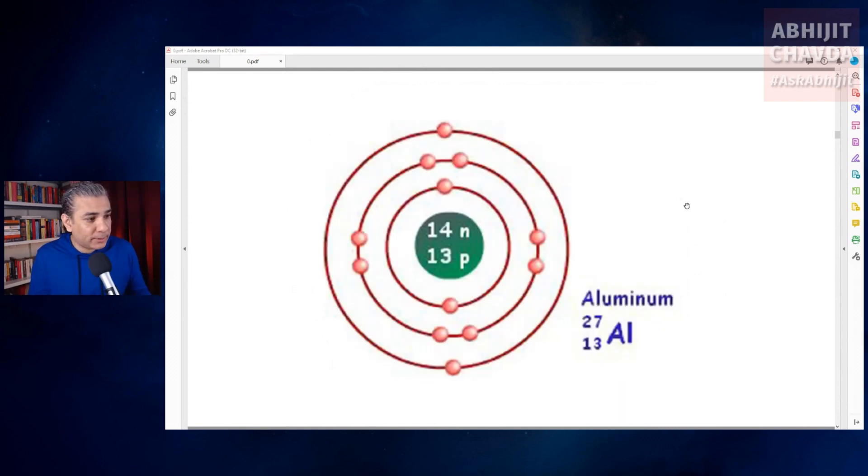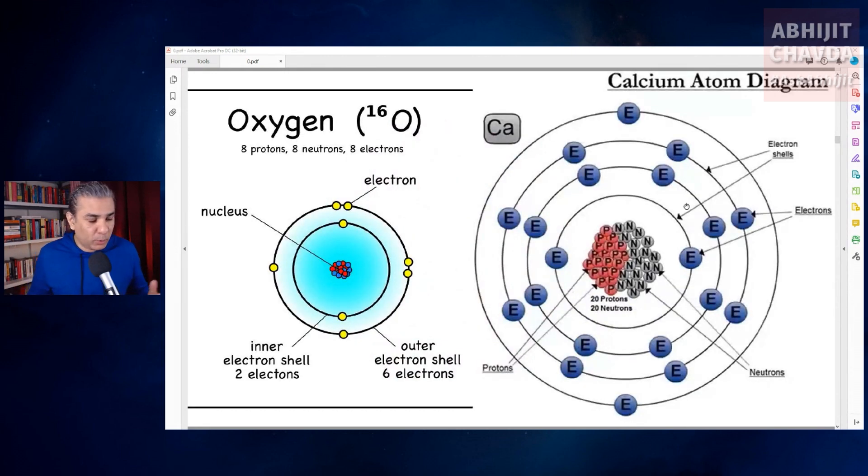Aluminum has an atomic mass number of 27, which is the sum of the protons and neutrons in the nucleus. 14 neutrons plus 13 protons is 27 nucleons. Similarly, carbon has an atomic mass number of 12, oxygen has an atomic mass number of 16, calcium 40, and so on and so forth.